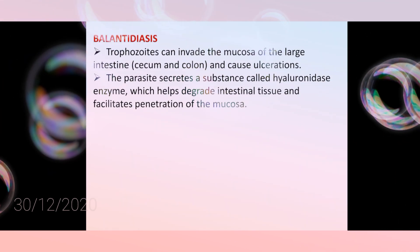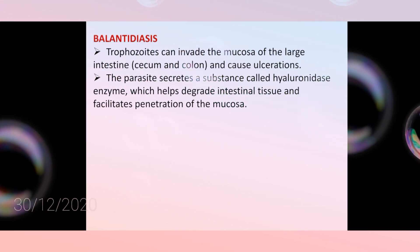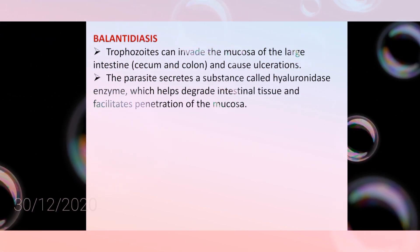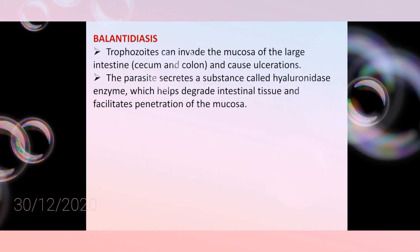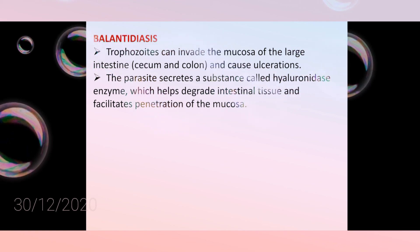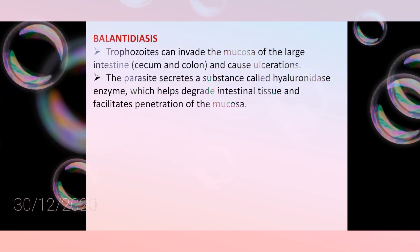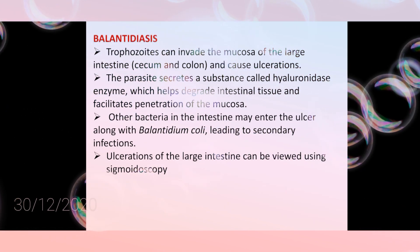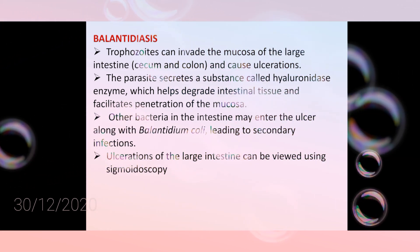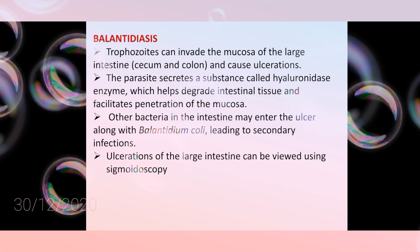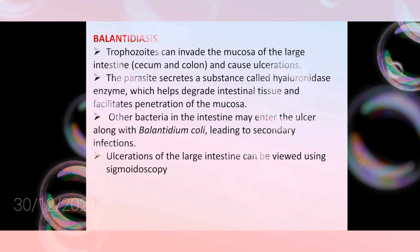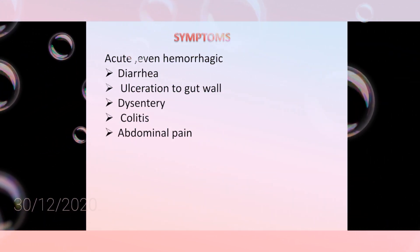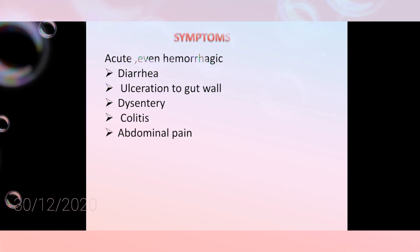Balantidium coli causes a disease called balantidiasis. Trophozoites can invade the mucosa of the large intestine and cause ulceration. The parasite secretes hyaluronidase enzyme, which degrades intestinal tissue and facilitates penetration of the mucosa. Other bacteria may enter the ulcer along with Balantidium coli, leading to secondary infection. Ulceration of the large intestine can be viewed using sigmoidoscopy. Symptoms include acute hemorrhagic diarrhea, ulceration of the gut wall, dysentery, and abdominal pain.